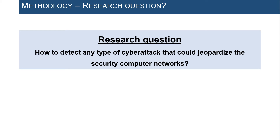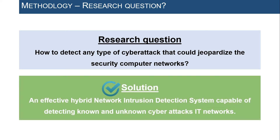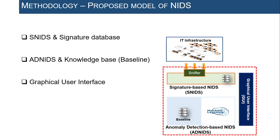Given the small number of research works related to hybrid intrusion detection, we asked ourselves: how to detect any type of cyber attack attempts targeting IT infrastructure? To answer this question, we propose a hybrid model of an intrusion detection system combining signature-based and anomaly detection-based IDS to detect both known and unknown cyber attacks. The signature-based module relies on Suricata, a multi-threaded open-source IDS, ensuring the capture of real network traffic through a sniffer component.